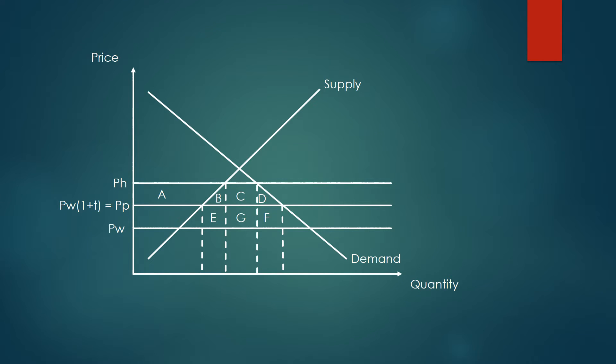We have the standard supply and demand diagram here with pH. pH is the status quo price, essentially the world price multiplied by some tariff T2. We're going to reduce the tariffs multilaterally so that all countries receive this tariff reduction, and therefore the price reduction goes from pH down to PW1 plus T.